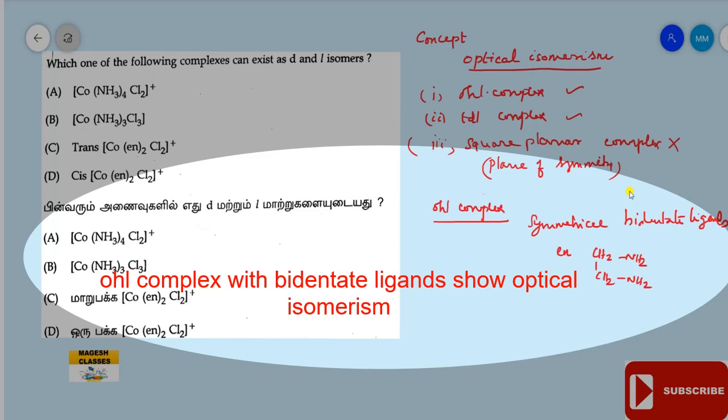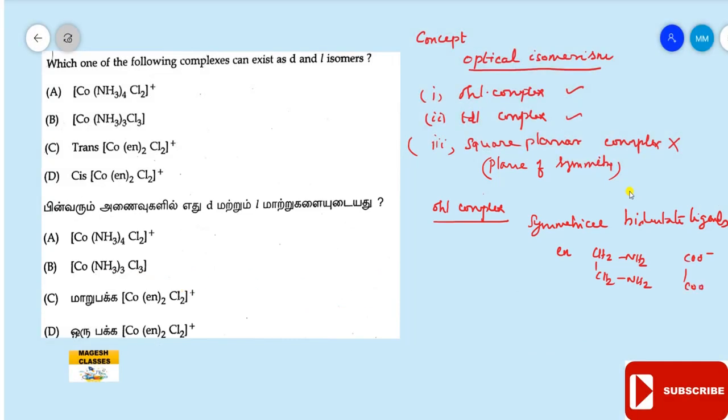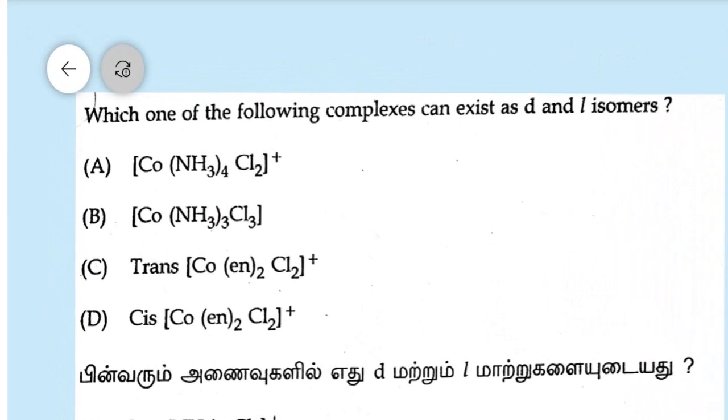One more example is oxalato. It is a symmetrical bidentate ligand. It shows optical isomerism. So the octahedral complex having bidentate ligands shows optical isomerism. Okay, right now come to the problem.